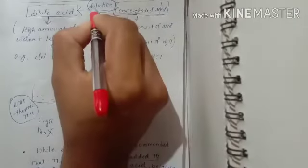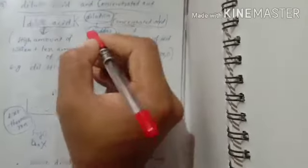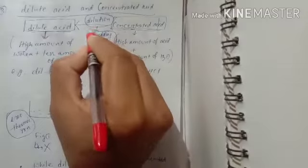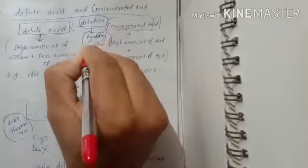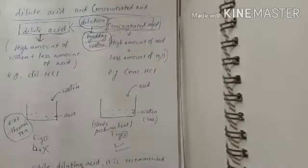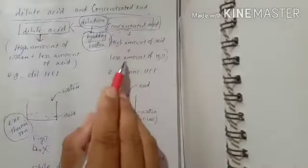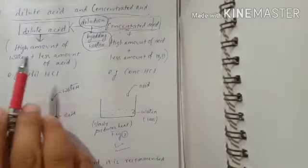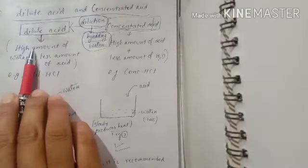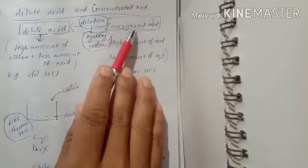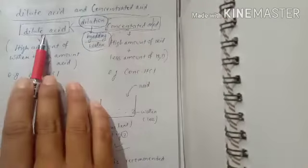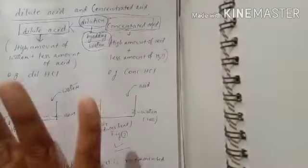We can convert concentrated acid to dilute acid, and this process is called dilution. The dilution process is done by adding water, because concentrated acid has less water. So to convert to dilute acid we increase the water amount by adding water molecules, converting concentrated acid to dilute acid. This is a very easy process.